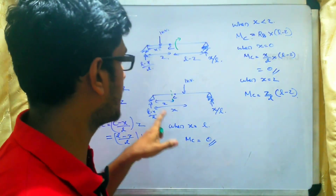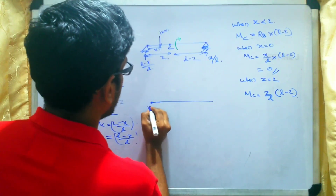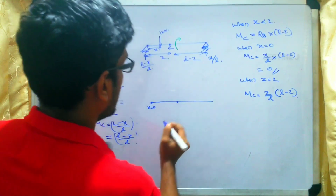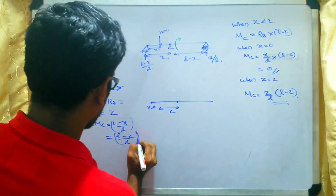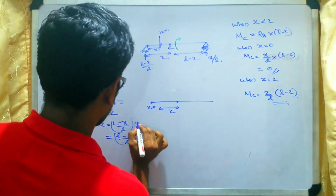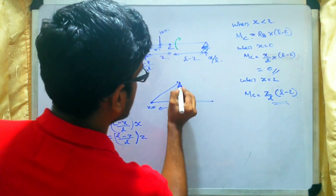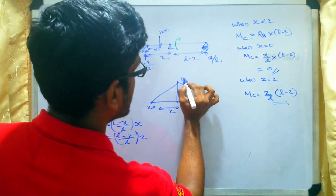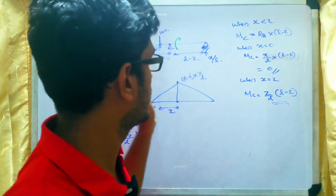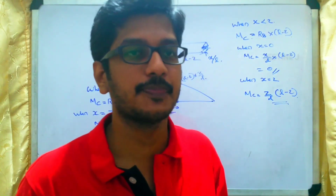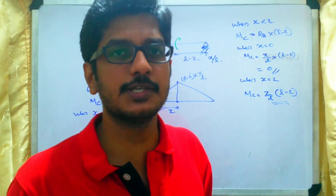Our next intention is to draw the bending moment ILD for the simply supported beam. When x equals 0, the bending moment value is 0. At distance z, the bending moment value is z by L multiplied by (L minus z), which is a positive value plotted above. At x equals L it returns to 0. This is the ILD for bending moment for a simply supported beam when a point load moves over the span. With this we end today's session.